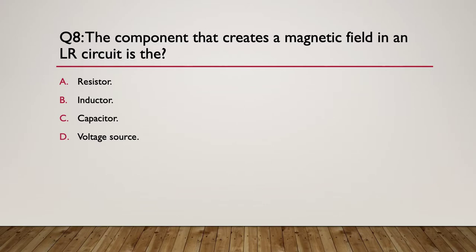Question 8: The component that creates a magnetic field in an LR circuit is what? What's it called? A. the resistor, B. the inductor, C. the capacitor, or D. the voltage source? A, B, C, or D.